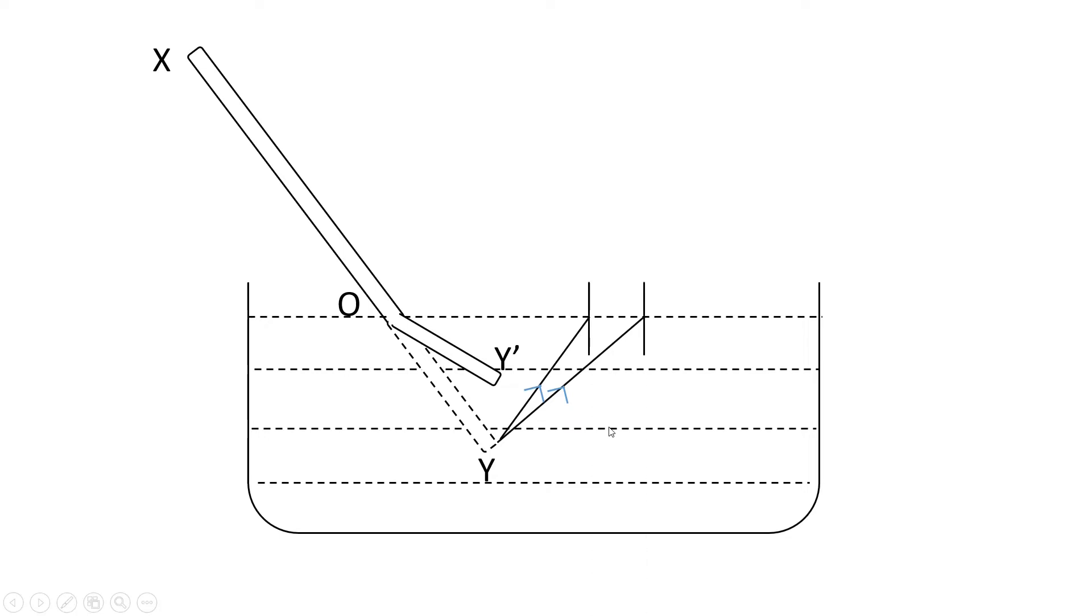As we know, when light enters from denser to rarer medium, it bends away from the normal. Both rays bend away from the normal.